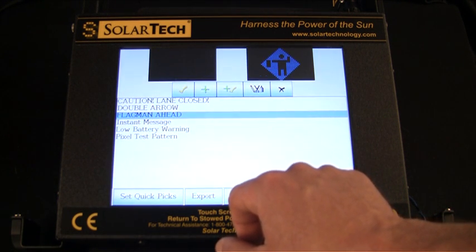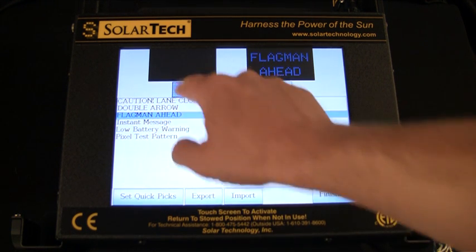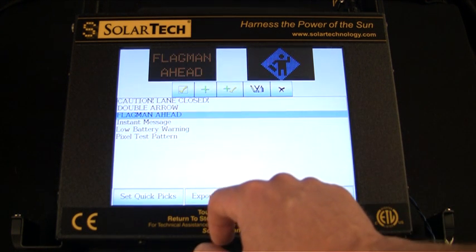A preview of your message will appear on the top right. If you're satisfied with your sequence, press the yellow check key.